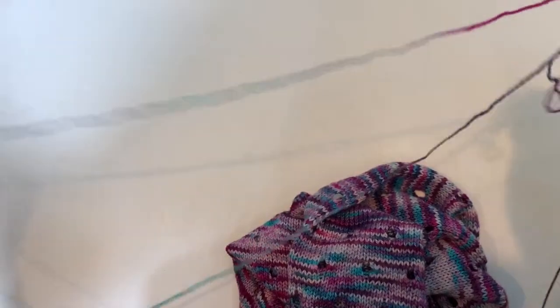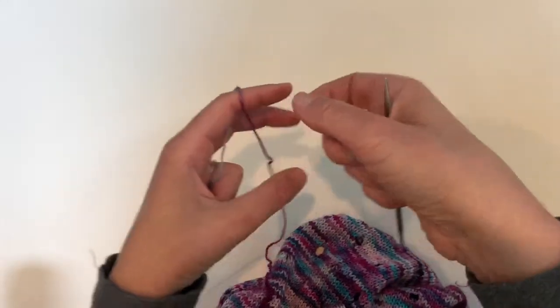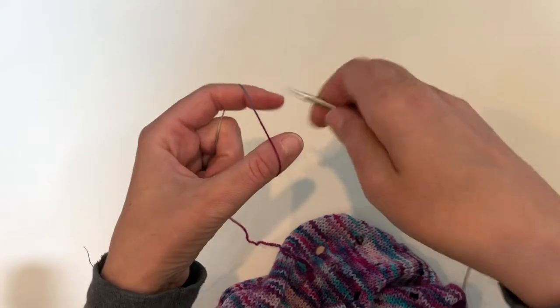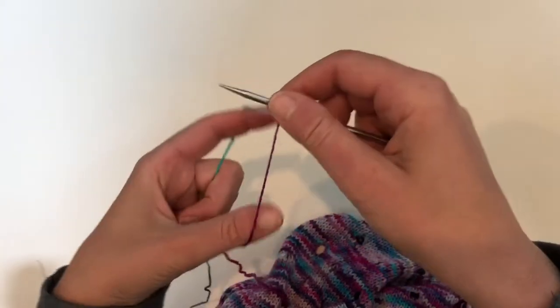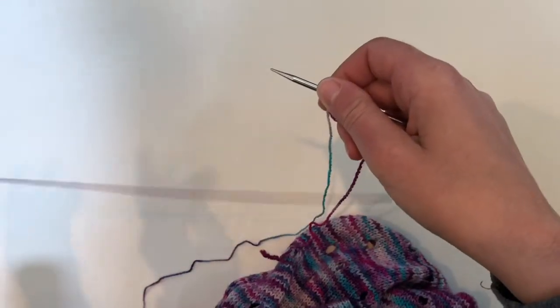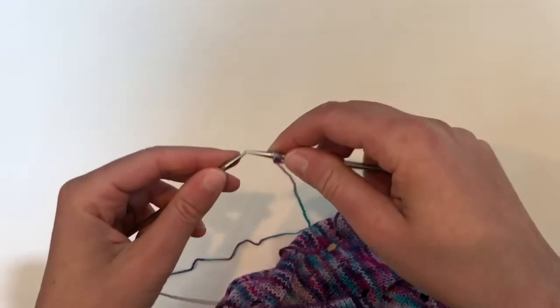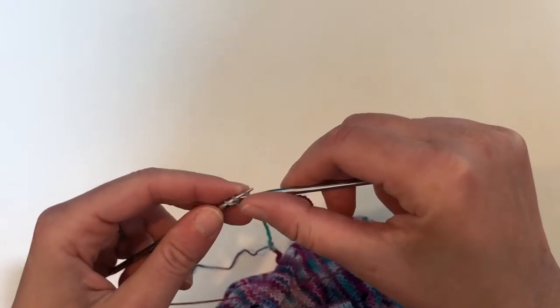So to do this kind of I-cord, we start by casting on three stitches, and the three stitches will form the I-cord at the bottom. You can use whatever method you want to cast on three stitches, and then keep the three stitches on your right-hand needle and bring up your left needle, and we're just going to transfer these three stitches back as if we were doing an I-cord.